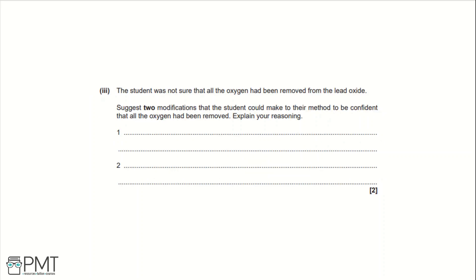Part 3. The student was not sure that all the oxygen had been removed from the lead oxide. Suggest two modifications that the student could make to their method to be confident that all the oxygen had been removed. Explain your reasoning. There are multiple options that will get you a mark for this question. You can either say heat to a constant mass, break up or spread the lead oxide, pass the methane through the tube as it cools, use excess methane, or bubble gas through lime water. All five of these options would get you each a mark. So you just need to pick two of the five to get your marks for this question.